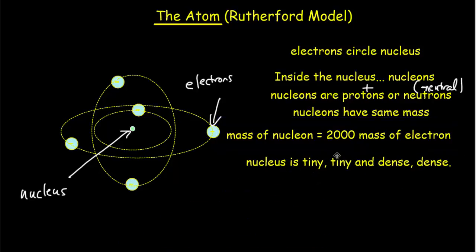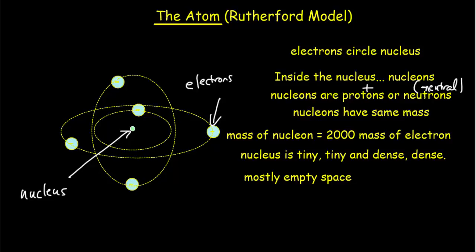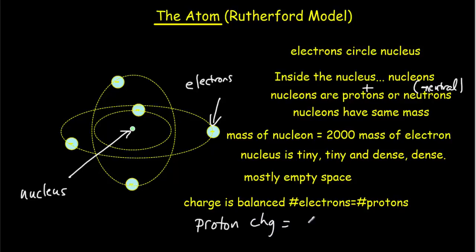So we have a nucleus that is extremely tiny and dense. In fact, we say that an atom is mostly empty space. The size of an atom compared to the size of a nucleus is like a marble within a football stadium. The charge is also balanced, meaning the number of protons equals the number of electrons, since a proton has just as much charge as an electron in magnitude.